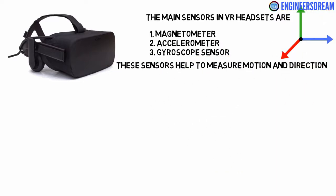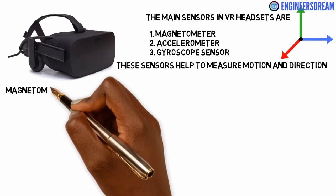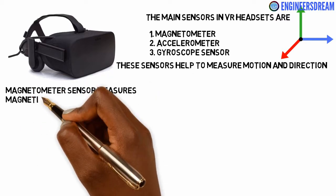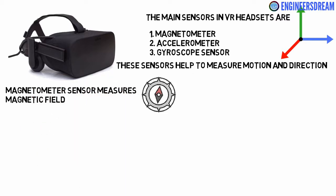A magnetometer sensor measures the magnetic field — it basically acts like a compass, and is generally used to detect the magnetic north and south position.